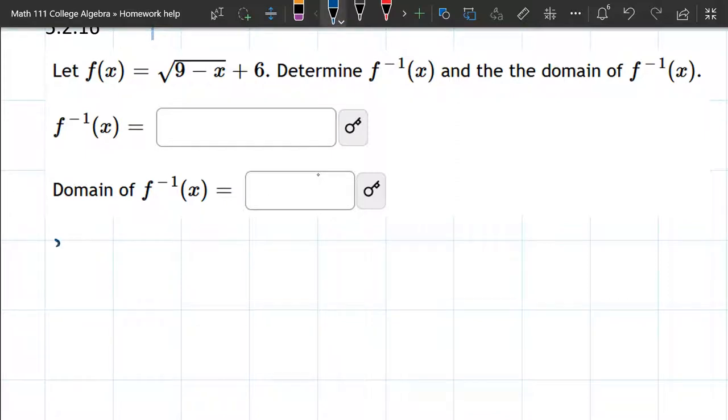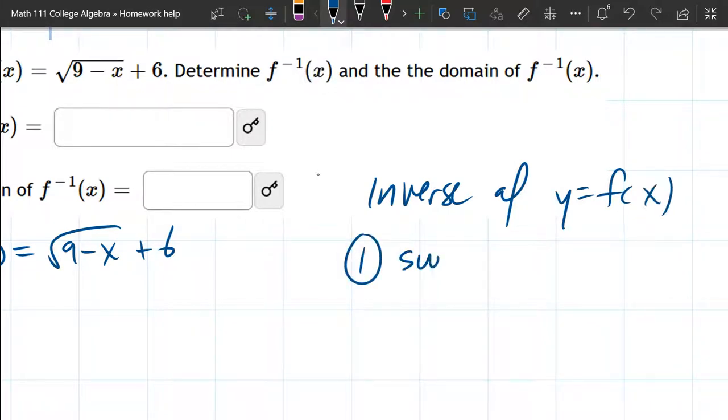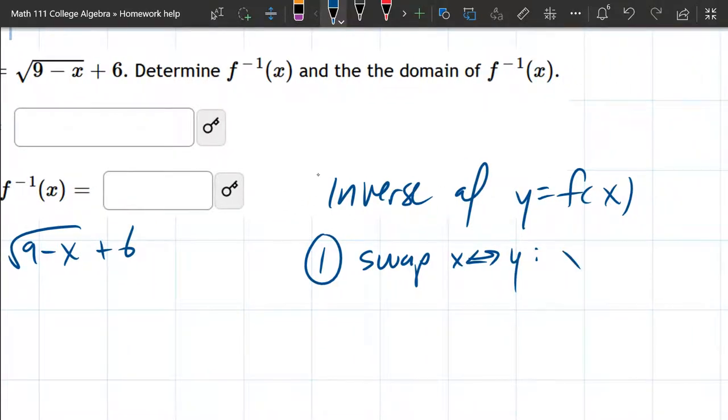Alright, so start out writing down, just rewriting, and let's write down how we get inverses. So inverse of y equals f(x). There's two steps. Swap x with y. So what that's going to give us is x equals f(y).